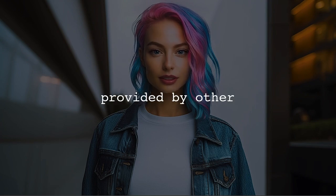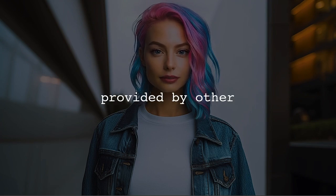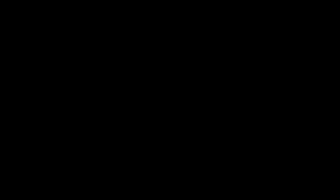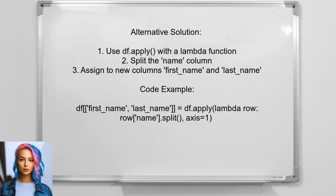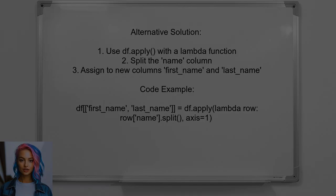Now let's look at the answers provided by other users. An alternative approach involves using the apply function with a lambda expression. This method splits the name column into first name and last name by applying the split method across each row.